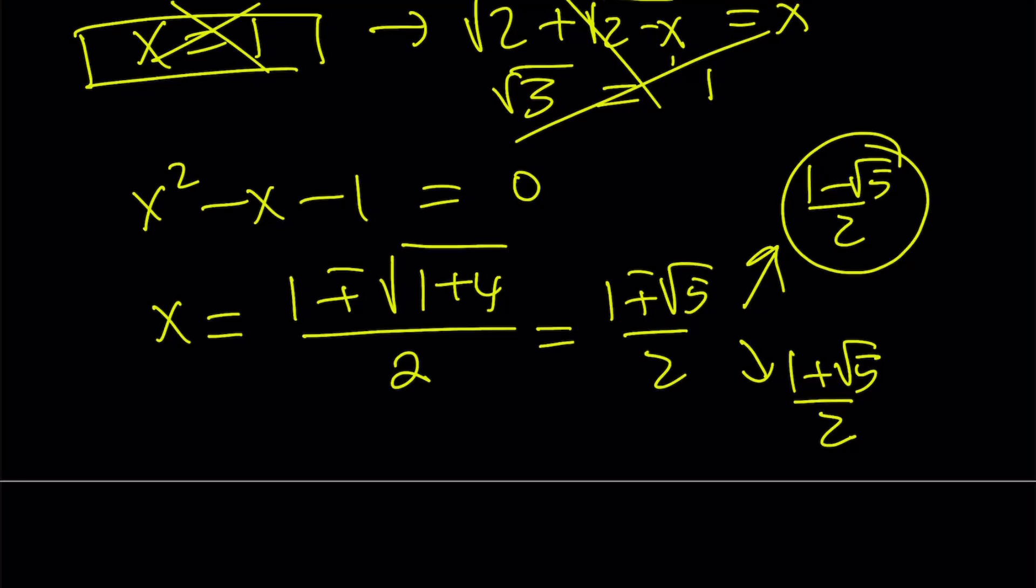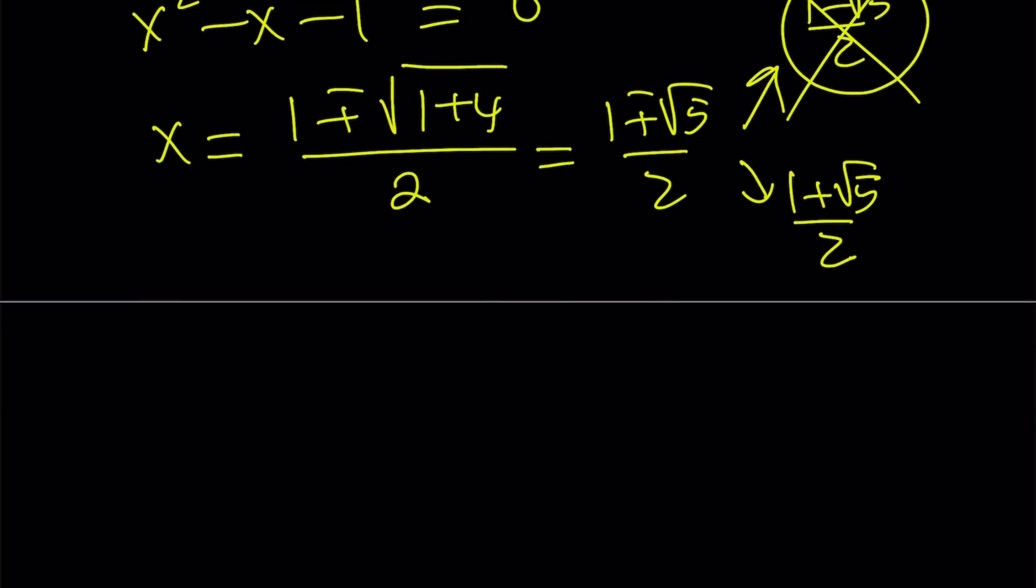Unfortunately this is a negative quantity, so we're also going to reject that, and we end up with a single solution. Yay! And guess what? That is our famous, or infamous, whatever you want to call that, golden ratio. Yay! This is the golden ratio.